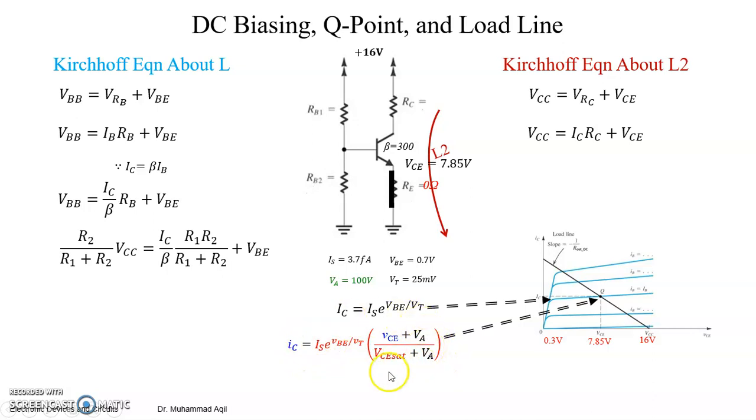That's why we don't have any value here. So we already know all the things here, so why not use this value, right? So we have VA, V saturation, all these things, VT, VBE, IS.